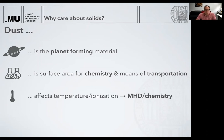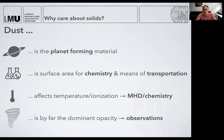Furthermore, dust is the major source of opacity, so it affects the temperature and density structure and the ionization in the disk. So it's also important for coupling to magnetic fields and again for chemistry. And last but not least, being the dominant opacity, it is also what we most readily observe as dust continuum thermal emission. So it determines the observations and, as we'll see later, it's also an important probe for the dynamical processes at play.